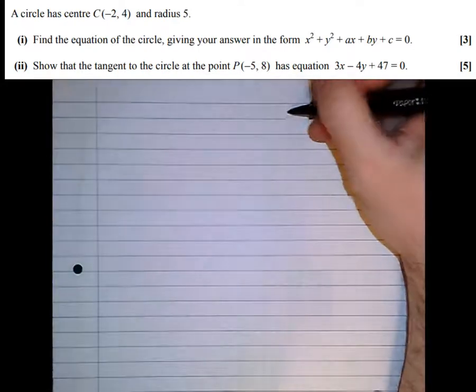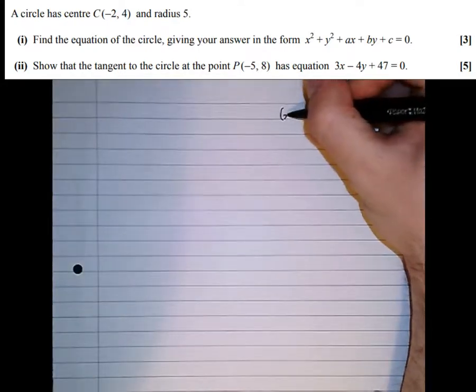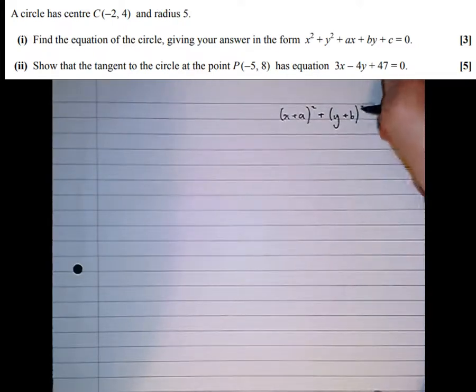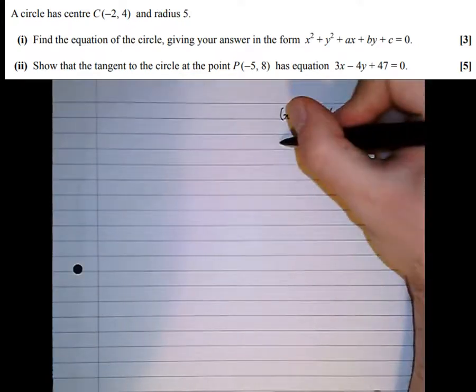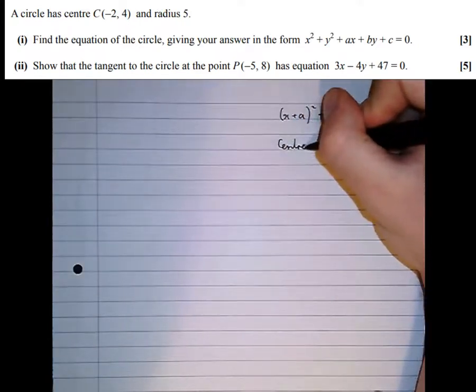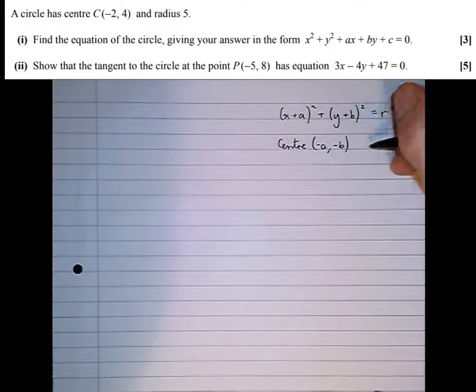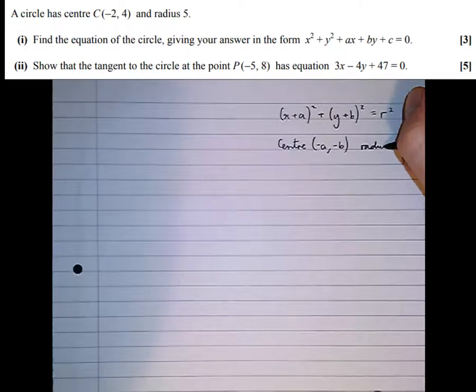First of all, we'll write a little note. If we've got a circle that has this equation, (x+a)² + (y+b)² = r², that's a circle with centre (-a, -b) and radius r.